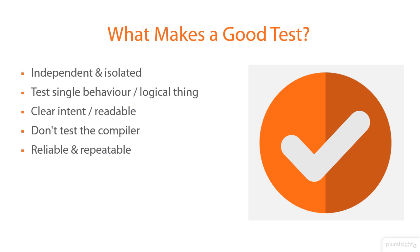A good test is reliable and repeatable. It's reliable because we should always trust the output of the test — we shouldn't be second-guessing it. Tests should produce the same result given the same set of circumstances every single time. If the codebase hasn't changed and a test sometimes passes and sometimes fails, then it's neither reliable nor repeatable.